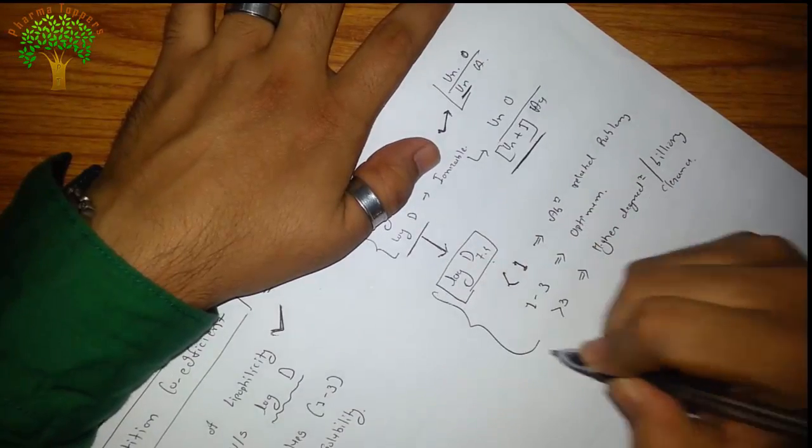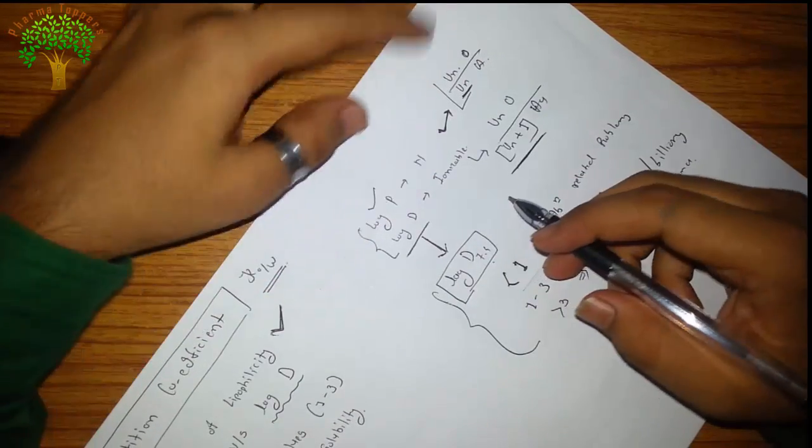This is the significance of log p and log d, and one can predict the fate of the compound by means of log p and log d.